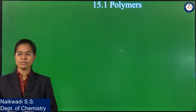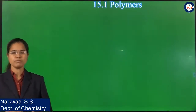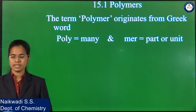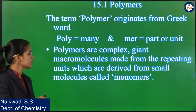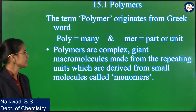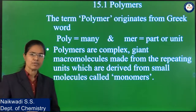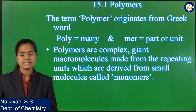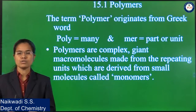What is meant by polymer? The word 'polymer' comes from the Greek words: 'poly' meaning many, and 'mers' meaning small parts or units. Polymers are complex giant macromolecules made up of repeating units which are derived from small molecules called monomers. There is interlinking between these small units to form a larger molecule known as a polymer.